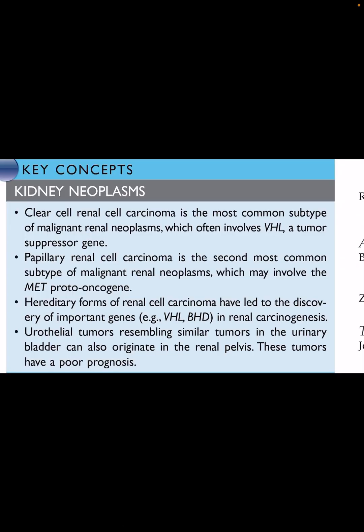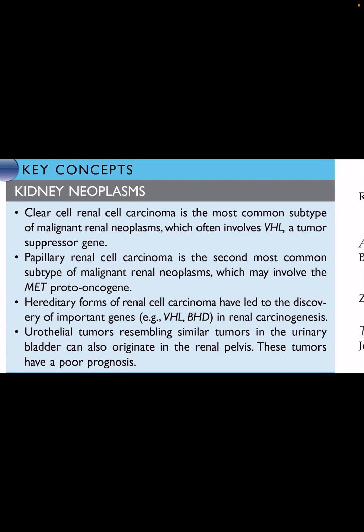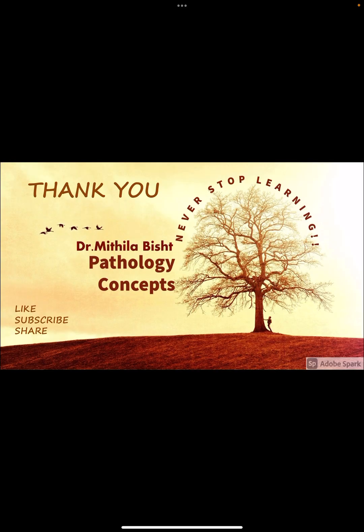To summarize: clear cell RCC is the most common subtype of malignant renal neoplasm, often involving VHL gene mutation, a tumor suppressor gene. Papillary RCC is the second most common type, which may involve the MET proto-oncogene. Hereditary forms have led to discovery of important genes like VHL and BHD in renal carcinogenesis. Urothelial tumors arise from the renal pelvis and have a poor prognosis. Thank you very much, and questions are welcome in the comment section.